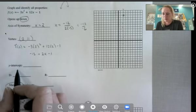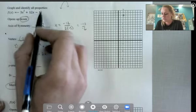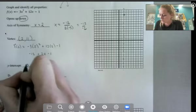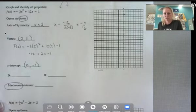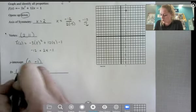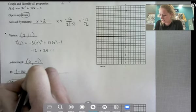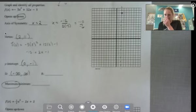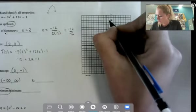So y-intercept, remember, when it's in standard form, is always c. So c is that constant on the end. So y-intercept always x is 0, and the constant on the end is negative 1. Domain for all quadratics is all reals. And range, remember, we have to look at the graph. So let's go ahead and finish the graph.